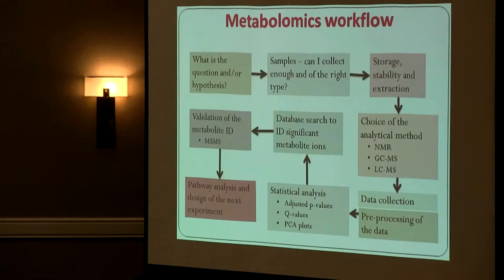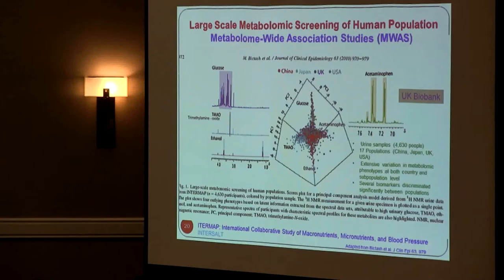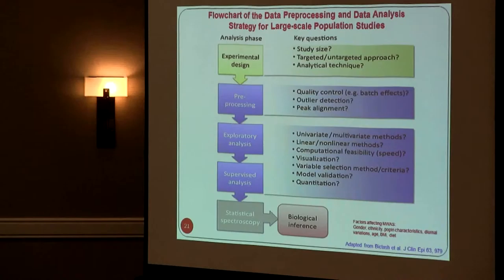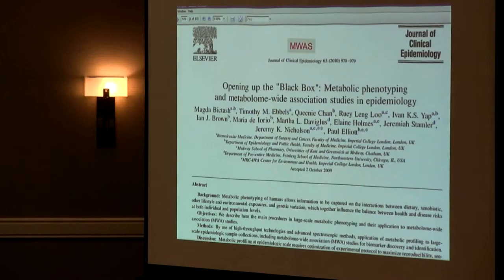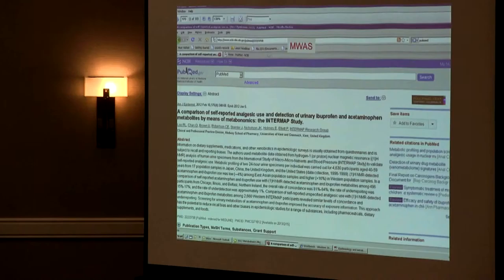Cohort resources are very important because once you get a promising marker you can go back to validate it. Regarding the metabolomic workflow, most individual labs have different approaches, but sample preparation is the key step, along with selection of technique, research design, and methods. As an example, different populations were studied based on metabolites through metabolomic association studies. For instance, branched-chain amino acids were used to predict diabetes risk, with a very large number of participants enrolled.